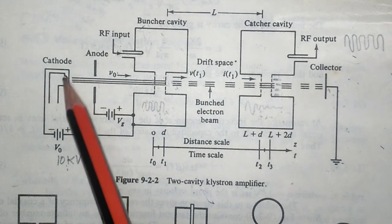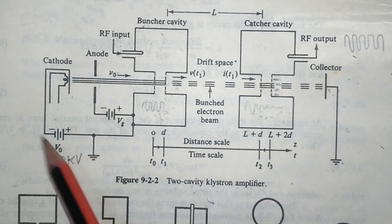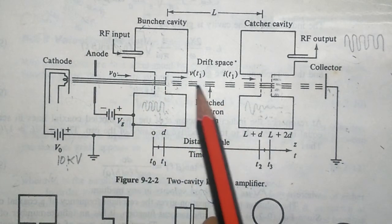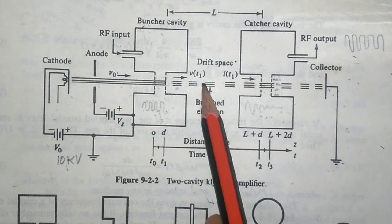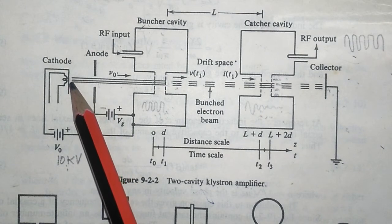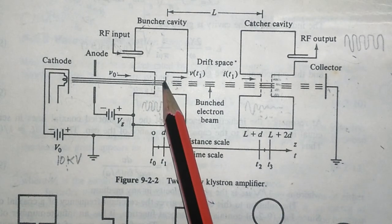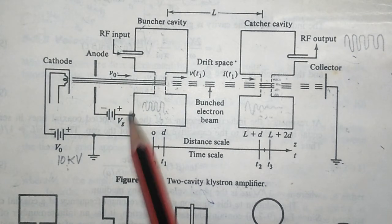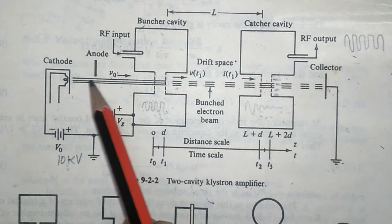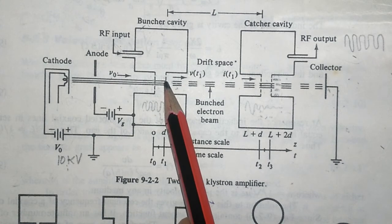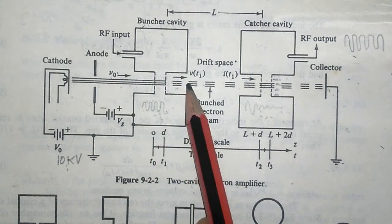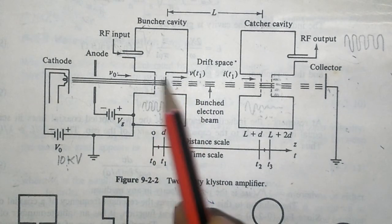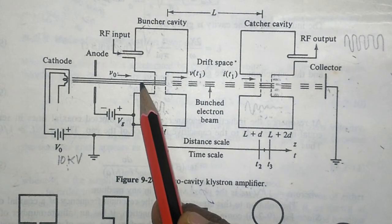When the device is turned on, electrons are emitted from the heated cathode and move in a continuous stream with uniform velocity V₀, since only the constant DC voltage is influencing them. When they arrive at the buncher cavity grid — which is a meshed structure that electrons can pass through — the continuous beam becomes discontinuous after passing through.